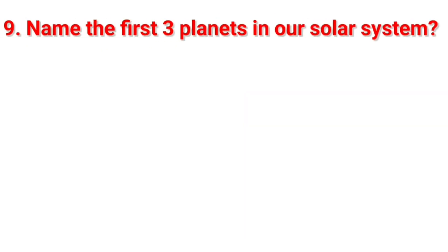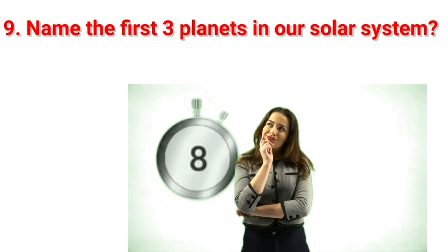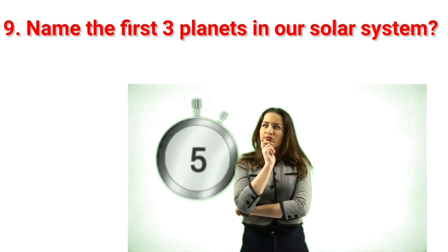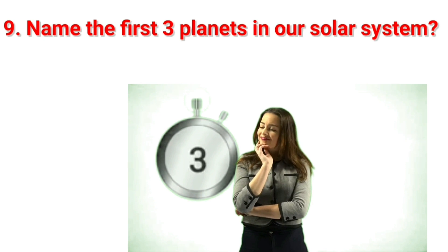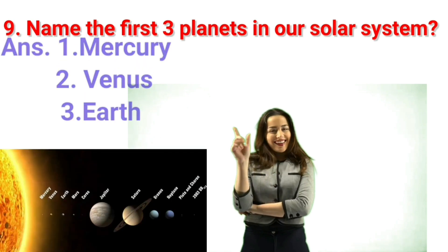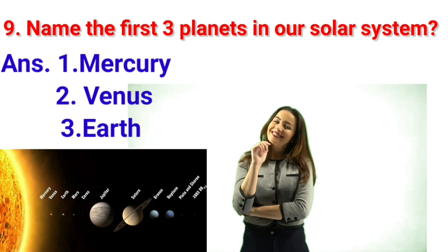Name the first three planets in our solar system. Answer is Mercury, Venus, Earth.